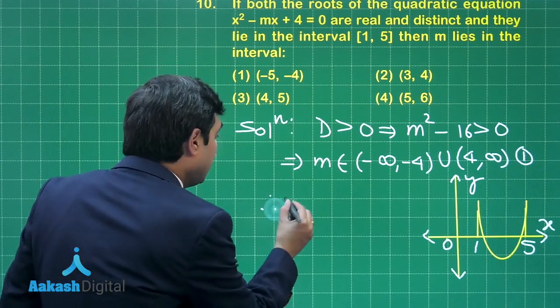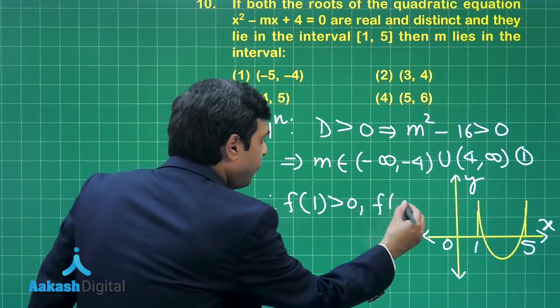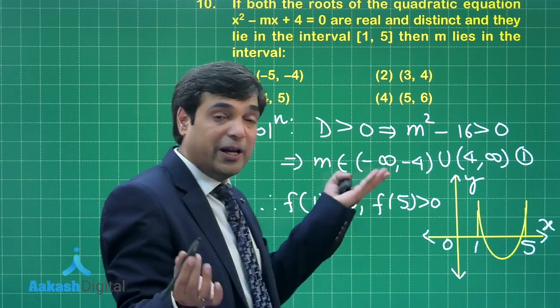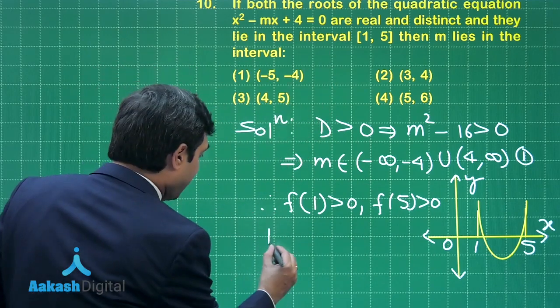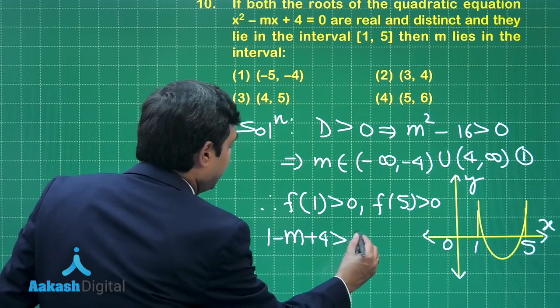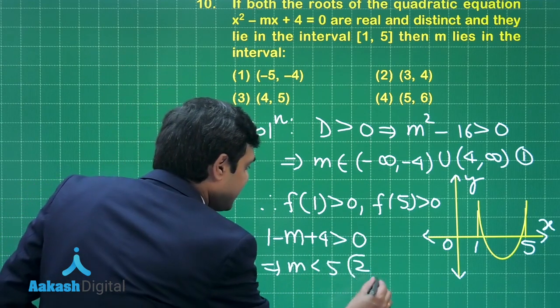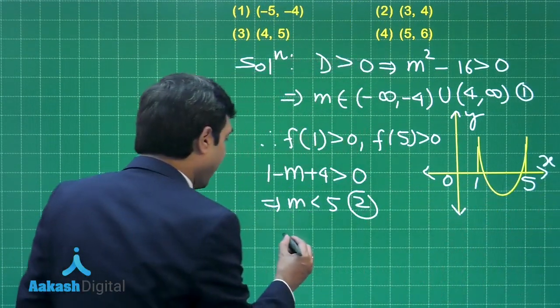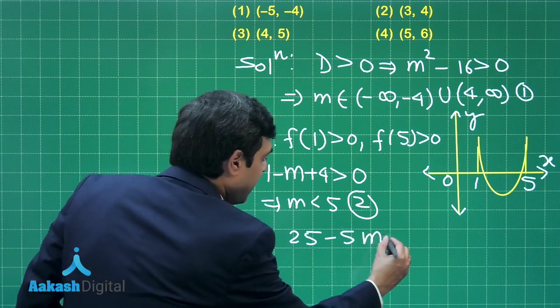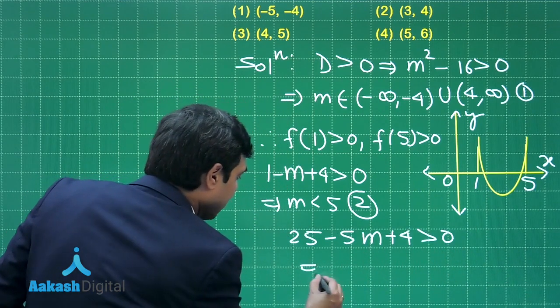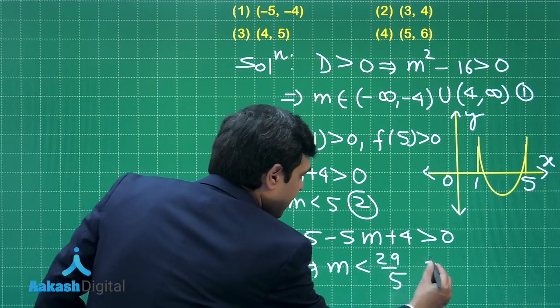Now, we can simply see here f(1) is positive, f(5) is positive because the parabola was opening upwards. When you put here in this equation 1, you get 1 - m + 4 > 0, meaning m < 5. This is result number 2. f(5) meaning 25 - 5m + 4 > 0 giving me m < 29/5, result number 3.